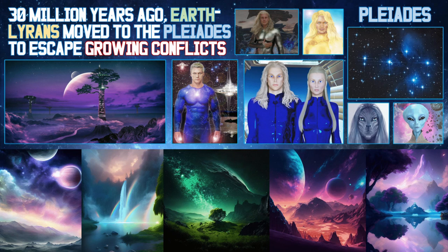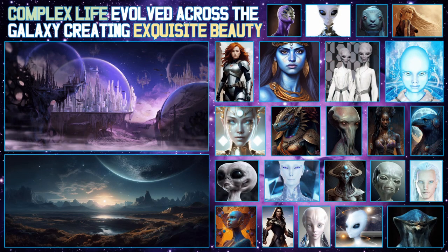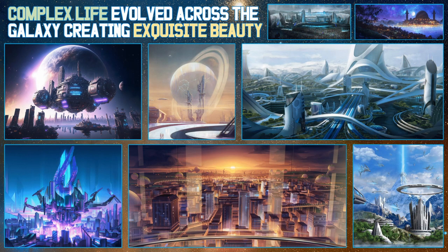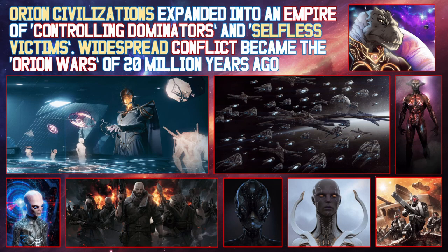The Pleiades are 444 light-years from Earth. The Pleiadian civilisation evolved to become harmonious, peaceful and loving. Complex life evolved across the galaxy, creating exquisite beauty. Some civilisations lived above or below the planet's surface to protect the environment, and other civilisations destroyed their planet through pollution or war. Orion civilisations expanded into an empire of controlling dominators and selfless victims.